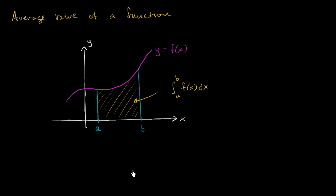The average value of our function over the closed interval between a and b, including a and b, we could think about it as some height — some value of our function, some height.